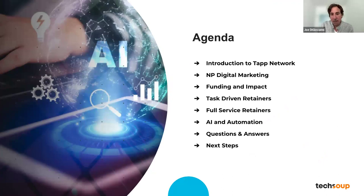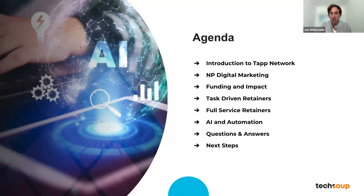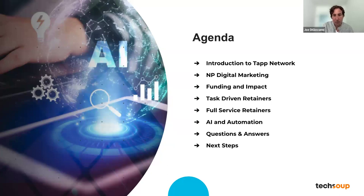Today's agenda: we're going to talk about Tap Network — we're TechSoup's exclusive partner for digital marketing and website services. We'll go through a quick overview of nonprofit digital marketing and how it impacts funding and the communities you serve. There are two types of services: task-driven retainers for smaller mid-sized nonprofits, and full-service retainers — essentially like having a full-time or part-time employee but getting a full team — generally for mid to larger-sized nonprofits. We also have AI and automation services. We'll send over this deck with all links and contact information at the end.